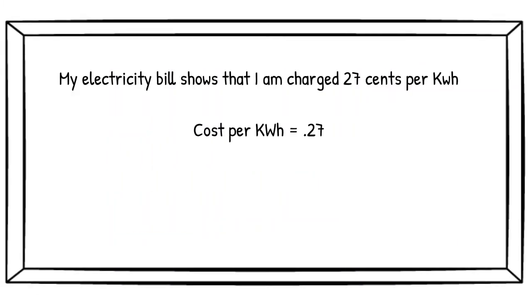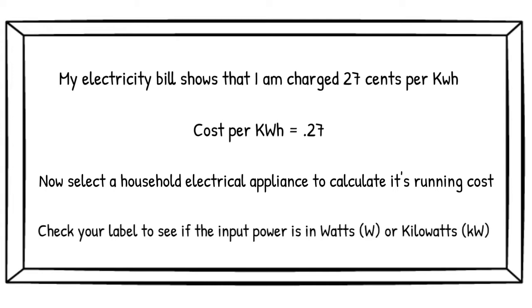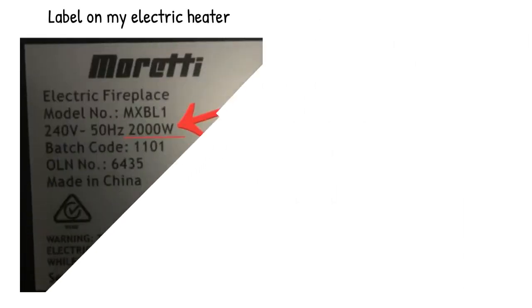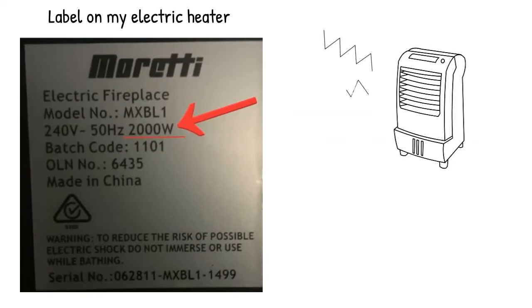Now that we know how much we are charged per kilowatt hour, the next step is to select a household electrical appliance to use in your equation. Once you have selected your item, check the label to see if the input power is in watts or kilowatts. For the purpose of this video, I'm going to use my electric heater as the appliance I want to calculate today. Here is the label from the heater and I can see that it shows 2,000 watts.